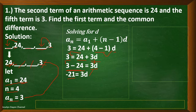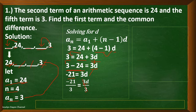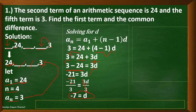To solve for d, divide both sides of the equation by 3. So 3d divided by 3 gives d, and negative 21 divided by 3 gives negative 7 as the value of our common difference. Since we have the common difference, we can now solve directly for the first term.